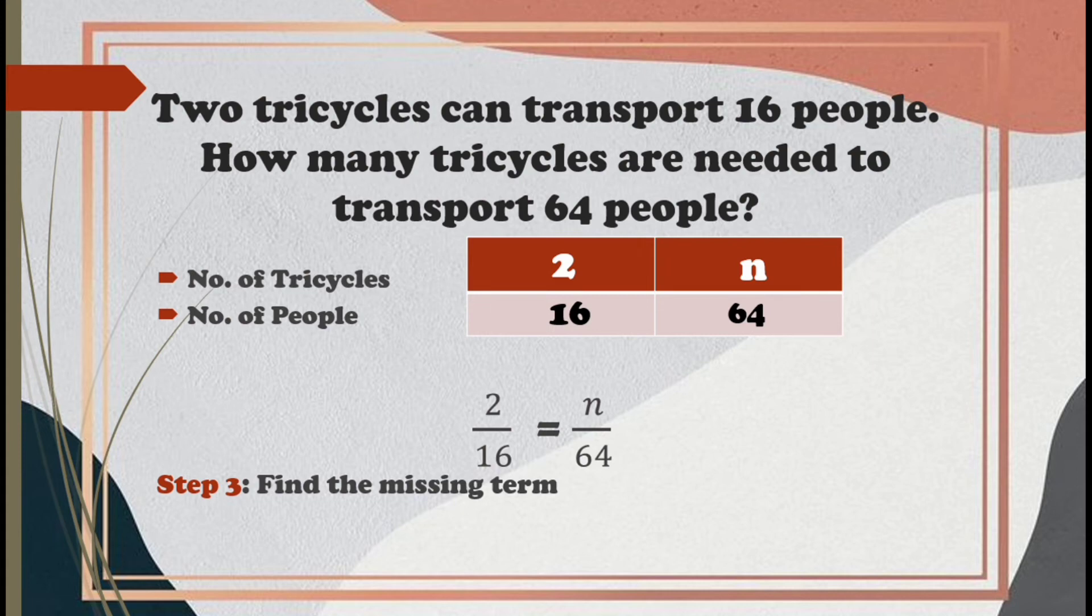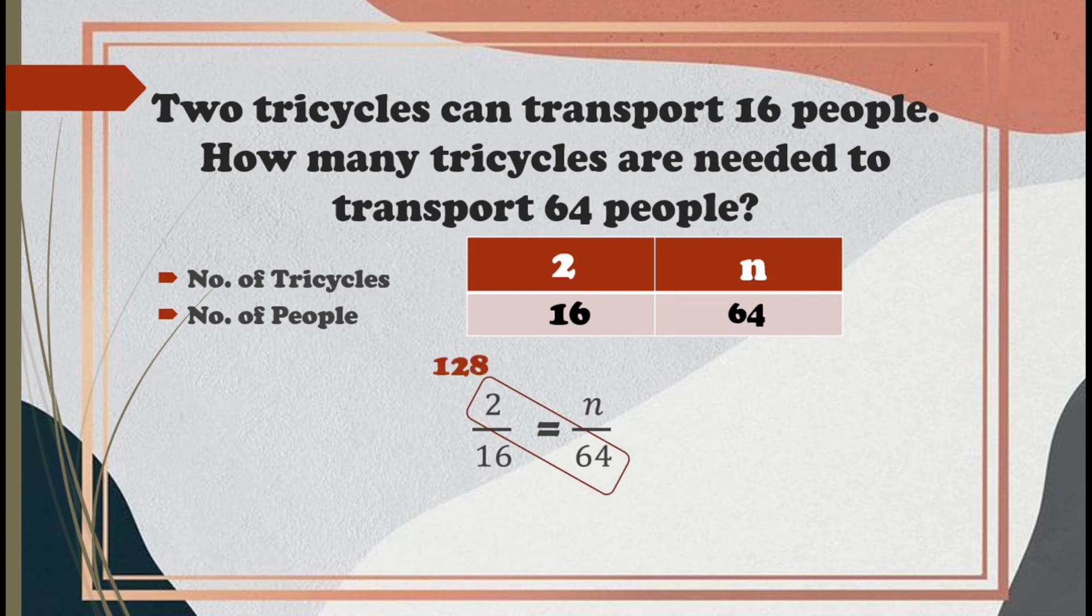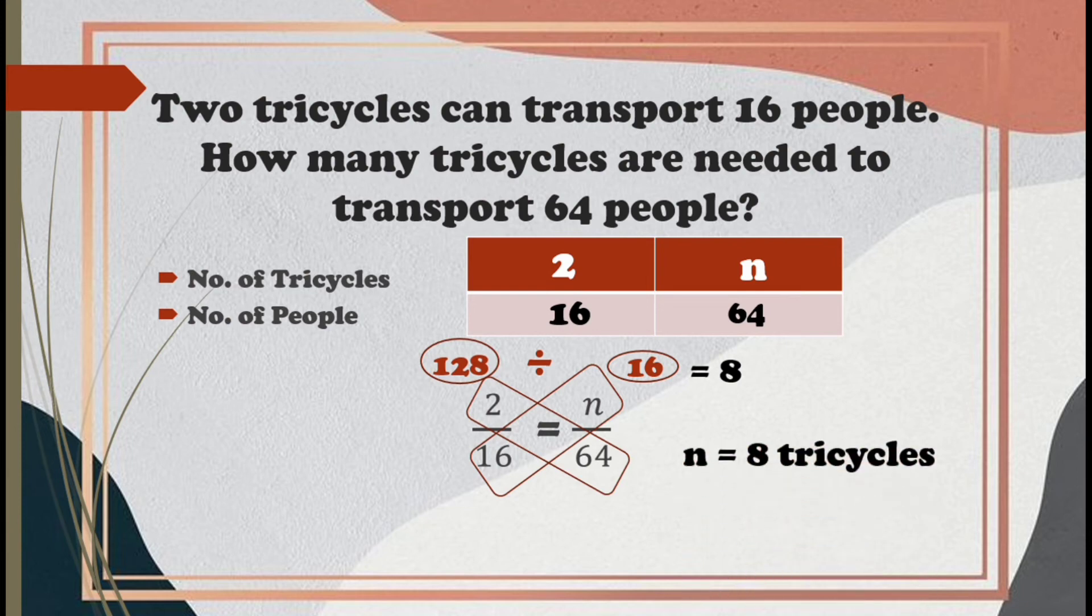To find the missing term, we're going to use a cross multiplication method. 64 times 2 is 128. 16 times N is 16N, but we are only going to write 16. And the next step is, let's divide. 128 divided by 16 is 8. Very good!